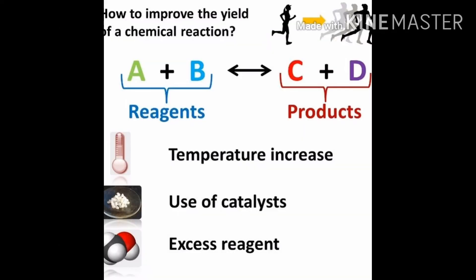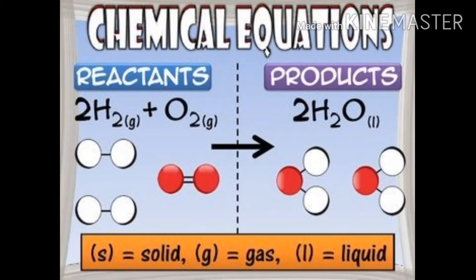A chemical reaction is represented by writing a chemical equation. Manjez, chemical reaction ही condensed रूपात, short form मध्ये, chemical equation ने दाखवतात. Ya chemical equation मध्ये reactant आणि product यांचे chemical formulas लिहिले जातात. It means, representation of a chemical reaction by using chemical formulas of reactants and products is called a chemical equation.